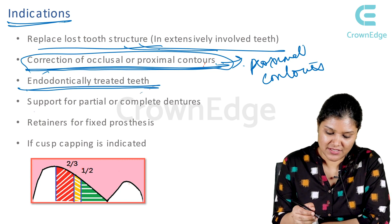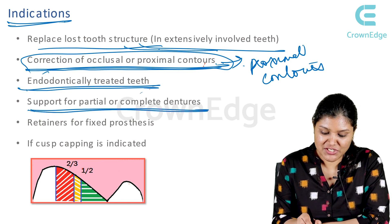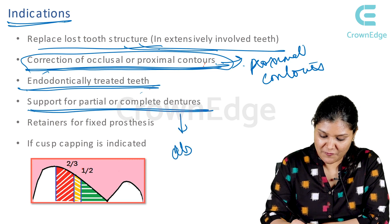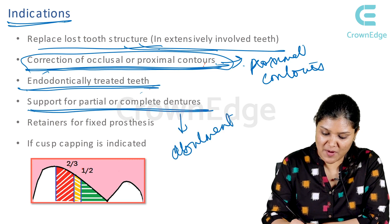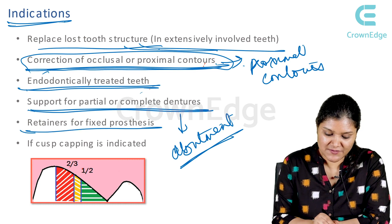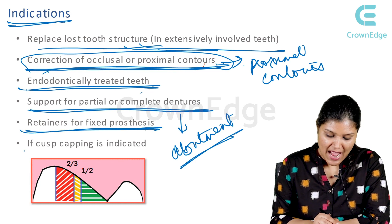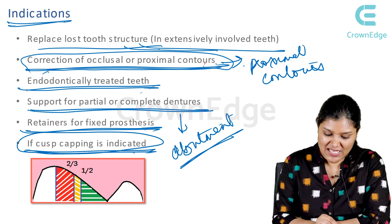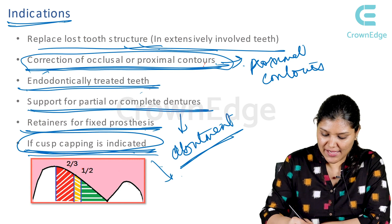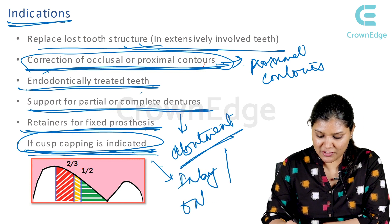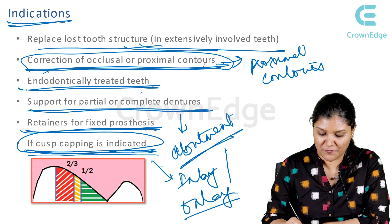Endodontically treated teeth and support for partial and complete dentures — you can have your abutment teeth for partial dentures and fixed partial dentures with inlays or onlays. Retainers for fixed prosthesis. And the last indication is if cusp capping is indicated: you will go for an inlay, and if cusp capping is indicated on all cusps, then you will go for an onlay.